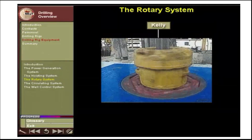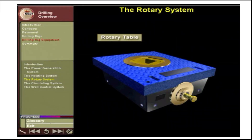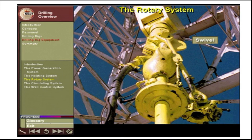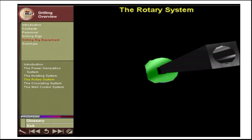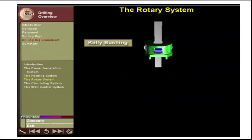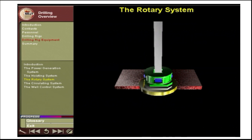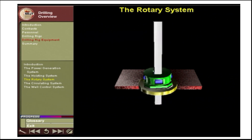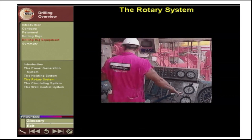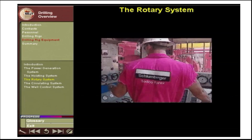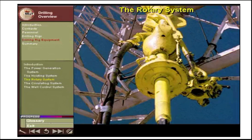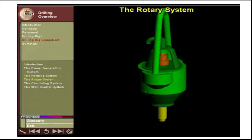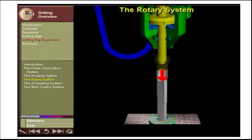The main components of the rotary system are the kelly, the rotary table, and the swivel. The kelly is a 40-foot long pipe with an outer hexagonal cross section that connects to the top of the drill pipe. When drilling, the kelly passes through the kelly bushing, which has four pins that slot into four post holes in the rotary table on the drill floor. The rotary table turns to rotate the kelly bushing, thus rotating the kelly and drill string. The rotary table is controlled from the driller's console and can turn in both clockwise and counterclockwise directions. The swivel is found at the top of the kelly, supports the entire drill string weight, and allows mud to be pumped down the drill string while the string is rotating.